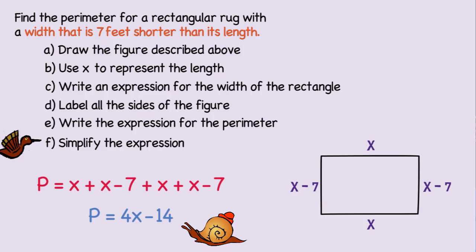So when we want to combine like terms, we need to look for everything with the exact same variables and exponents. Add those together and then see if there are any other like terms to add.